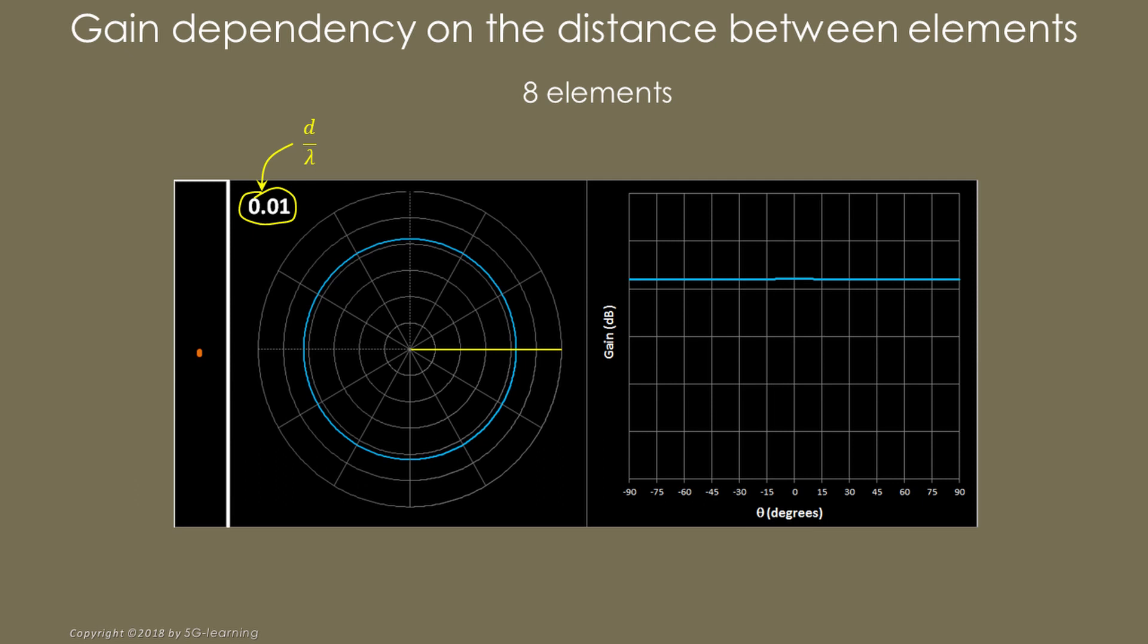Consider, for example, an array composed of eight elements placed at one-hundredth wavelength inter-element distance. When elements are such close to each other, the antenna array pattern is practically omnidirectional. The following animation shows the pattern evolution of this eight elements array when the inter-element distance changes from one hundredth to half wavelength.